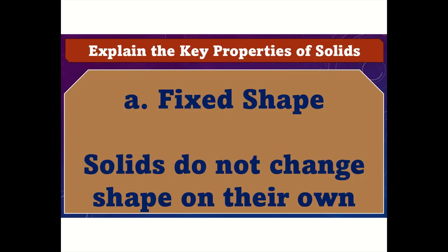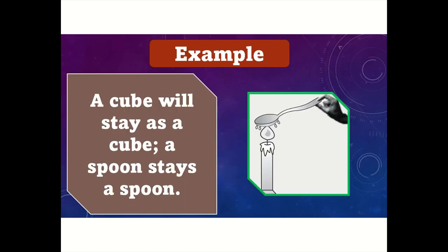Key properties of solids. A: Fixed shape. Solids do not change shape on their own. For example, a cube will stay as a cube, and a spoon stays a spoon.